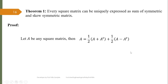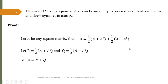Now we let P = (1/2)(A + A^T) and Q = (1/2)(A - A^T), such that A = P + Q. We will now prove that P is a symmetric matrix and Q is a skew-symmetric matrix.